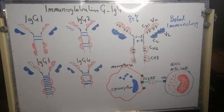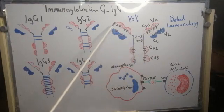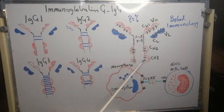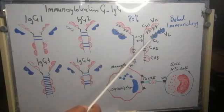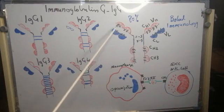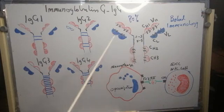The IgG molecule consists of two identical heavy chains, which we call gamma chains, and two identical light chains. These light chains are either kappa or two lambda light chains.